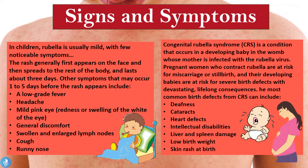In congenital rubella syndrome, this condition occurs in a developing baby in the womb of a mother infected with the rubella virus. Pregnant women who contract rubella are at risk for miscarriage or stillbirth — they can undergo a spontaneous abortion and lose their child during the infective state. Their developing babies are at risk for severe birth defects with devastating lifelong consequences, including deafness, cataracts, heart defects, intellectual disabilities, liver and spleen damage, low birth weight, and a skin rash at birth.